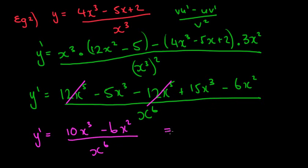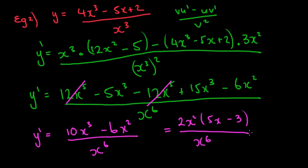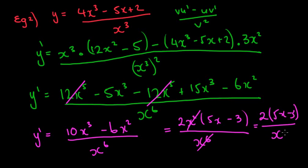We can simplify further since we have x's on top and bottom. Factorizing the numerator: 2x²(5x - 3), all over x⁶. Then x² cancels with x⁶, leaving 2(5x - 3) / x⁴. You could also leave the answer as (10x - 6) / x⁴ — either form is acceptable.